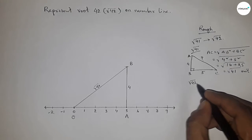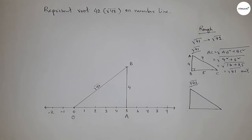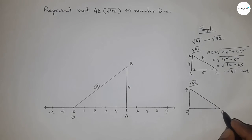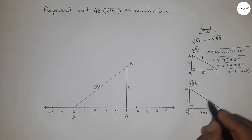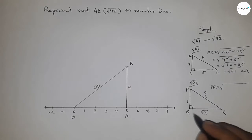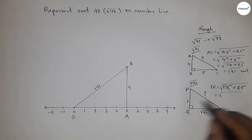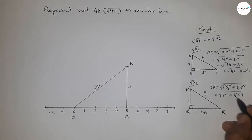Now representing root 42. If there is a right angle triangle PQR with base root 41 unit and height 1 unit, then what is hypotenuse? By Pythagorean theorem, hypotenuse PR equals root over PQ square plus QR square.